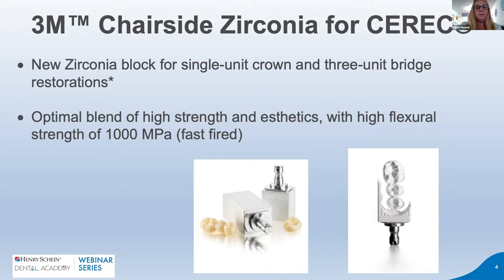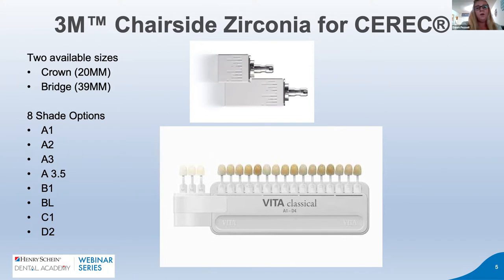The 3M zirconia has been designed for single unit crowns and also for three-unit bridges. It has high strength with pleasing aesthetics, and the flexural strength is 1,000 megapascals in a fast firing cycle with the Speedfire. There are two size options: a 20mm block for crowns and a 39mm block for bridges - the larger size accounts for the shrinkage factor within the firing cycle. There are eight shade options available that match the Vita Classic Shade Guide.